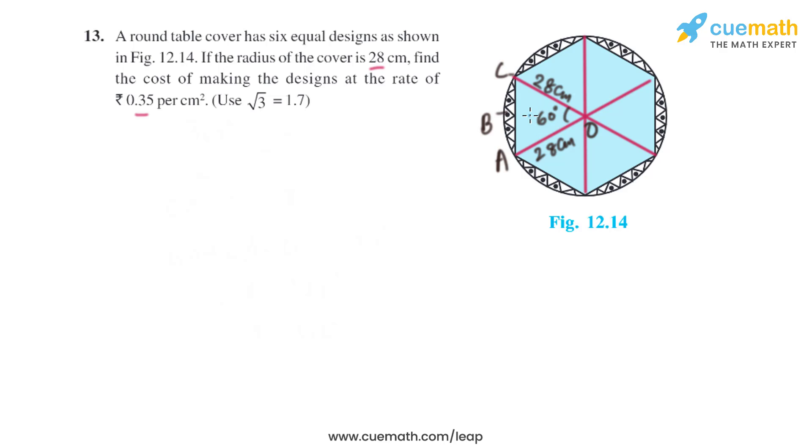So let's find the area of the sector. As we can see there are six equal sectors, so it will be 360 divided by 6 which is the same as 60 degrees. So one of the sectors will subtend an angle of 60 degrees.